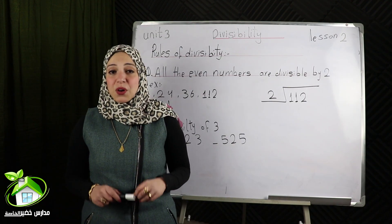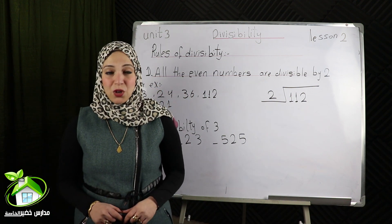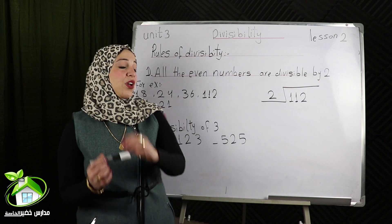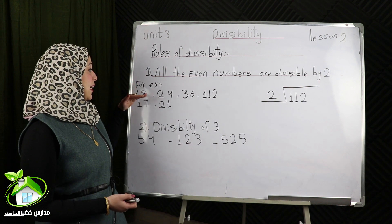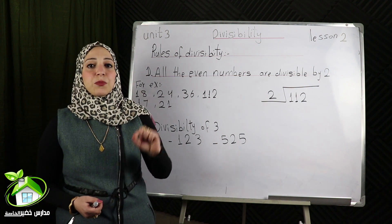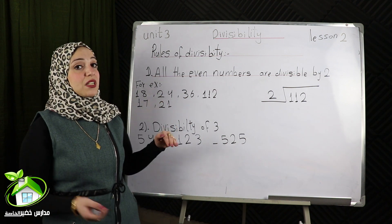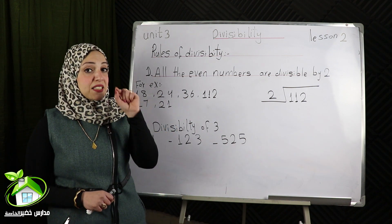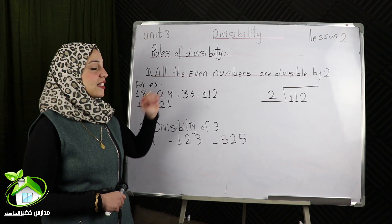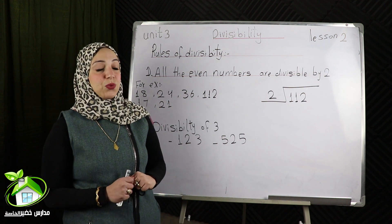The first rule: all the even numbers are divisible by 2. For example, 80 is an even number, so it's divisible by 2. 24 is also an even number and is divisible by 2. 36 is an even number, so it's divisible by 2.